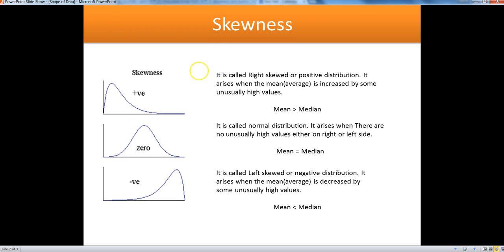The very first shape on the left hand side is positive or right skewed. Here is a quick definition about this type of pattern: it is called right skewed or positive distribution because it arises when the mean is increased by some unusually high values.